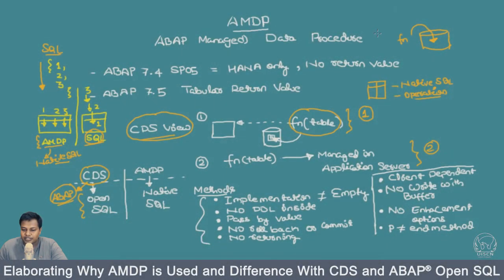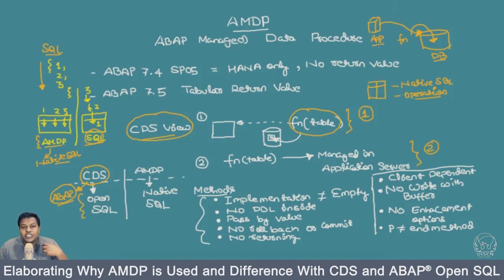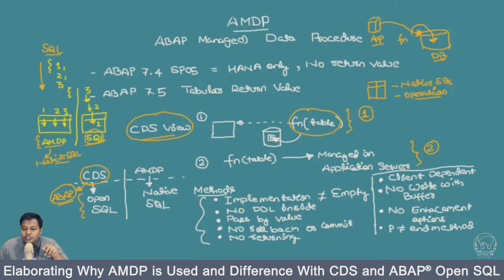There are two main important things. I want the management of the object to be done on the application server and I want the execution to be done inside the database — so I get the best of two worlds. When management is performed in the application server, it sits as part of a BAP repository, so I can transport these changes into multiple systems, following the existing processes to transport changes into quality, production, or multiple systems.